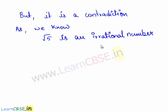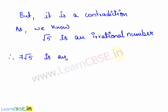This contradiction is due to our wrong assumption that 7 times root 5 is a rational number. Therefore, 7 root 5 is an irrational number.